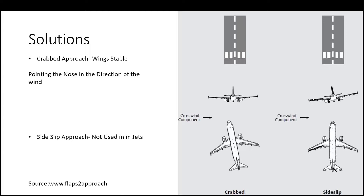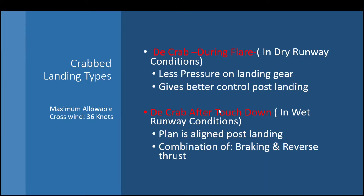There are many solutions but we'll stick to one. The first is the crab approach and the second is the sideslip. The sideslip technique is not preferred for big jets like the 737 or A320, so we will focus on the crab approach. The first technique applies an opposite force towards the direction of the wind, basically completing the entire approach with the same stance.